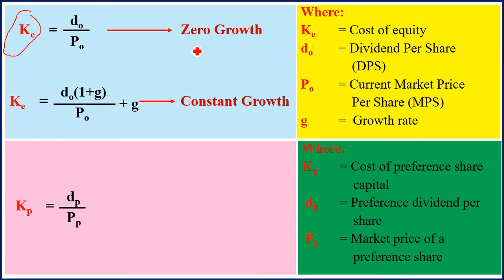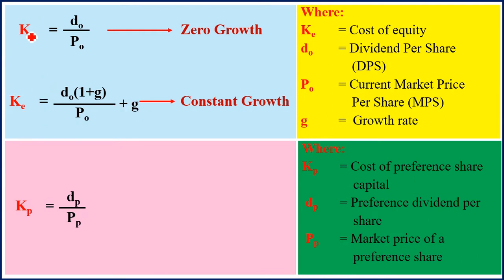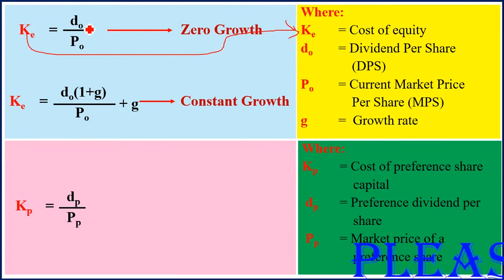To get the cost of equity, if there is no growth in dividends, the formula is Ke = D0 / P0. Dividends are the shareholders' earnings — when a company makes a profit, some of it is distributed to shareholders in the form of dividends. If there is constant growth in dividends at a rate G, then Ke = (D0 × (1 + G)) / P0 + G.